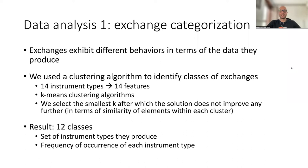Instrument types are like bonds or certificates or equities or funds or indices, just to name a few. We use a clustering algorithm to identify classes of similar exchanges. The data sets included 14 different instrument types, and we use them to build a 14 feature space. And we use a K-means clustering algorithm, with different values of K number of clusters. We then selected the smallest value of K, after which the solution does not improve any further, meaning that in terms of similarity of elements within each cluster, we did not improve the solution further.